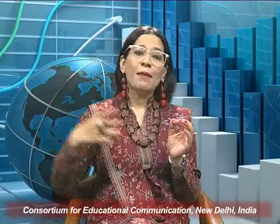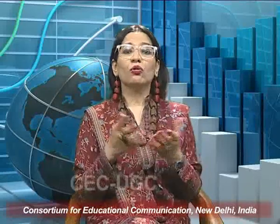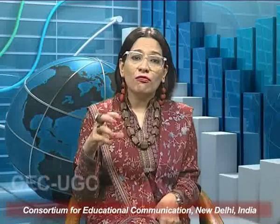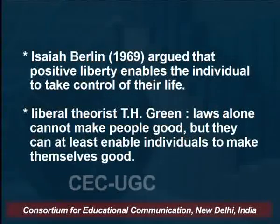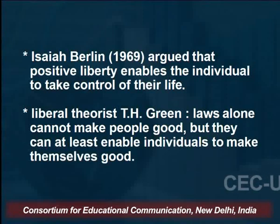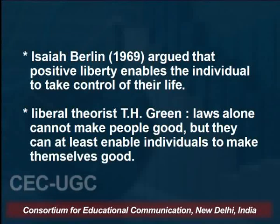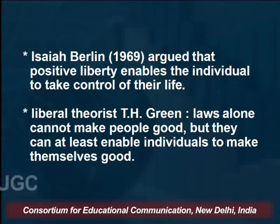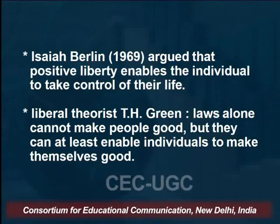There is a clear contrast here. The Austrian school of economists extolled the virtues of laissez-faire economics, with the classical liberal perspective giving the market a bigger say and limiting the state's role. In contrast, social liberals — such as William Beveridge, the founder of the modern welfare state — believed that the most vulnerable in society require a great degree of state support. Isaiah Berlin, in his important 1969 work, argued that positive liberty enables individuals to take control of their lives. Liberal theorist T.H. Green also pointed out that laws alone cannot make people good, but they can at least enable individuals to make themselves good.